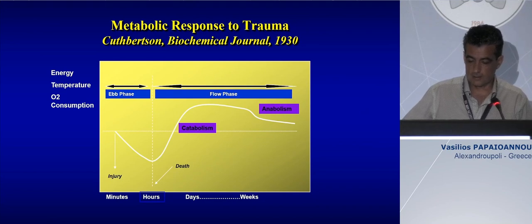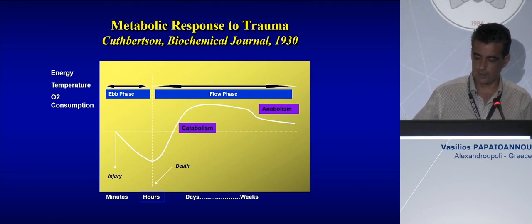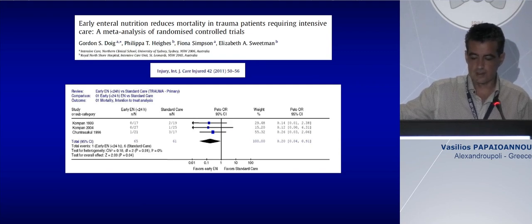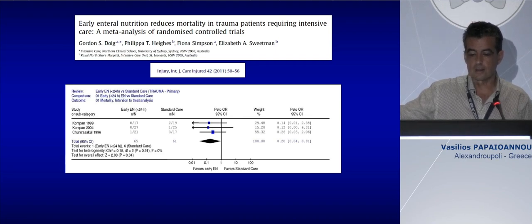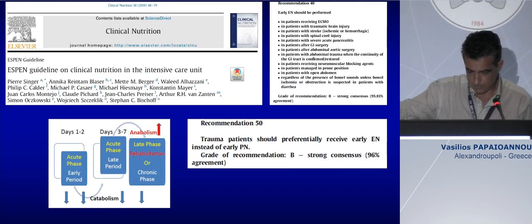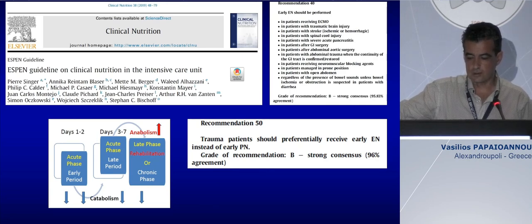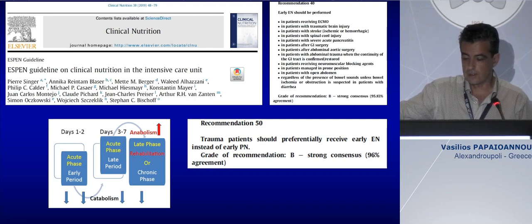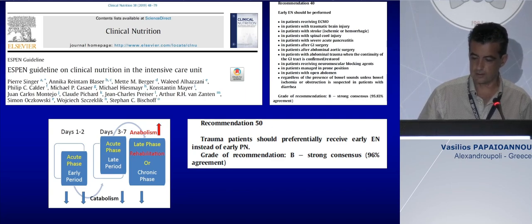Do not forget Cuthbertson's classic theory of ebb and flow phases of metabolism — early catabolism and late anabolism. We need to feed these patients. The first systematic review and meta-analysis published 10 years ago, based on three RCTs, showed that early enteral nutrition increases survival of multi-trauma patients. According to recent guidelines by ESPEN, we should feed all trauma patients early. All trauma patients should receive early enteral nutrition instead of early parenteral nutrition, particularly patients suffering from traumatic brain injury, spinal cord injury, or abdominal trauma where intestinal continuity has been restored.